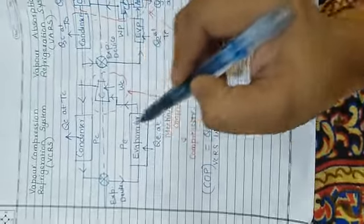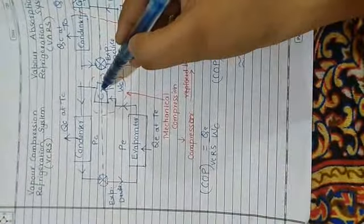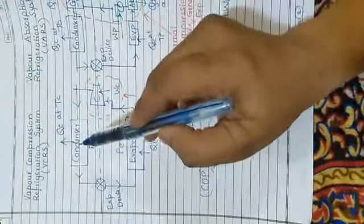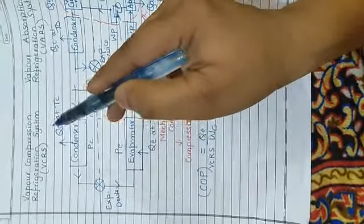The refrigerant circulates through these elements, heat is absorbed in the evaporator, work is given to the compressor and heat is rejected by the refrigerant in the condenser.